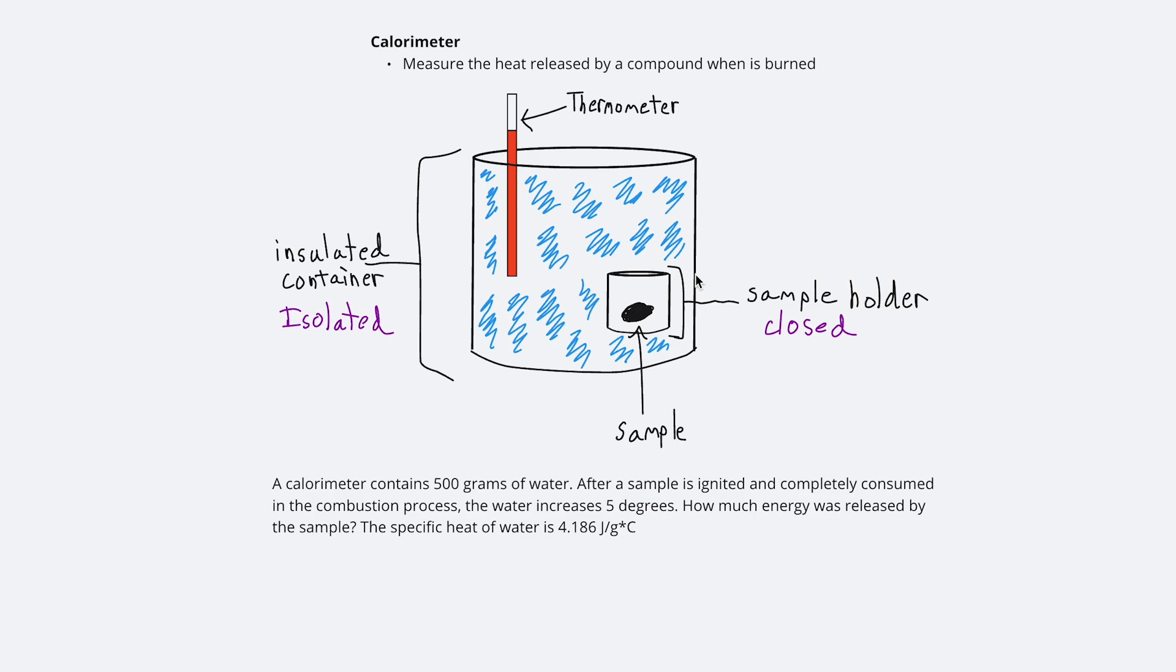What we do is we will ignite this sample so that it starts undergoing the combustion reaction. That will make the temperature inside the sample holder get much, much hotter. And because it's a closed system, it is able to exchange that energy with its surroundings. So that energy will leave the sample holder and go into the surroundings. And all that blue that is drawn, that is water.